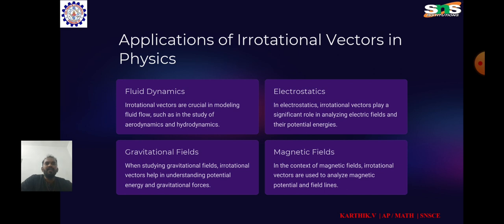Applications: In fluid dynamics, irrotational vector fields are extensively used in the study of ideal fluid flow. In electrostatics, electric fields generated by static charge distributions are often irrotational. Similarly, in magnetostatics, magnetic fields produced by steady currents or permanent magnets can be irrotational. In Newtonian gravity, gravitational fields generated by mass distributions can also be considered irrotational.